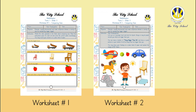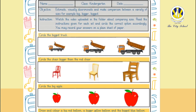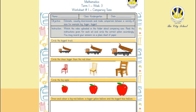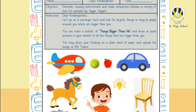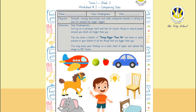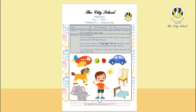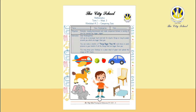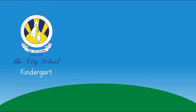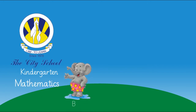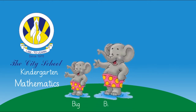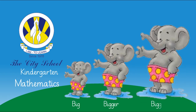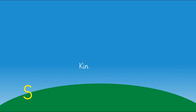There are two worksheets uploaded in the folder. Download worksheet number one, read the instructions carefully, and choose the correct size. For worksheet number two, you have to draw or paste pictures of all the things that are bigger than you. You may record your observations in the form of a booklet or on a plain sheet of paper. Well, that's the end of the lesson — see you soon, and until then, keep comparing sizes!